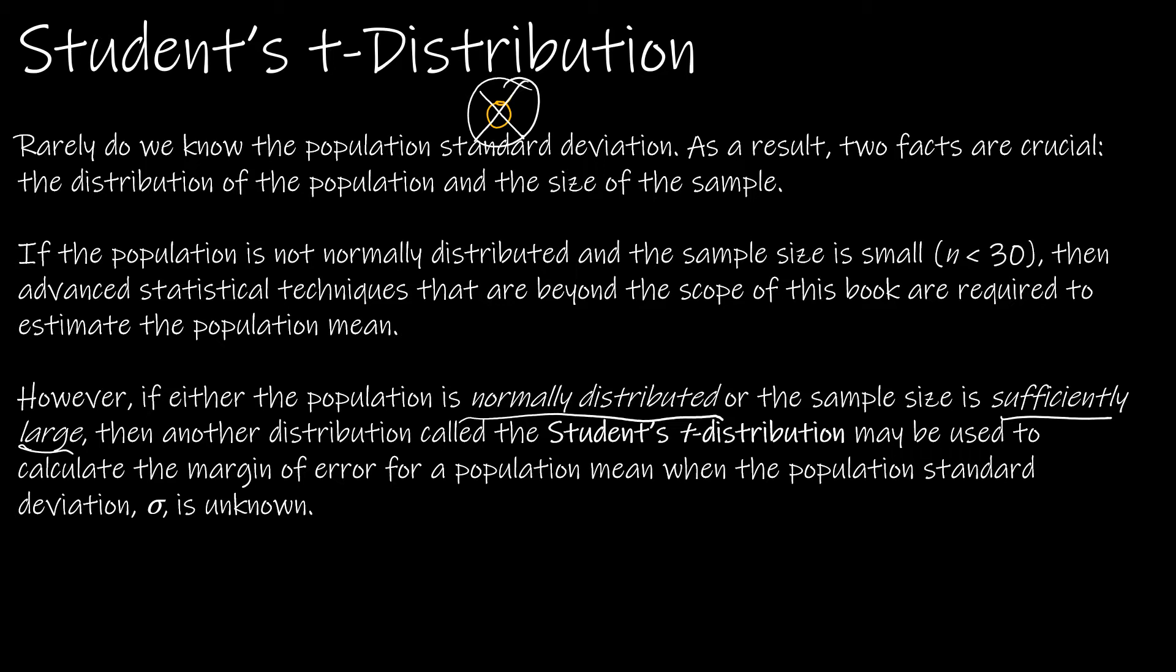Now the interesting thing about this is that a man named William Gossett actually discovered this. He worked at Guinness and was responsible for sampling, looking at things like hops and all the things that beer brewers would need to know. He wanted to use a small sample size, so he continued to study statistics and came up with this student's t-distribution.